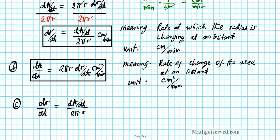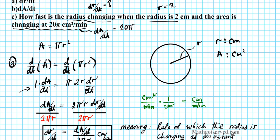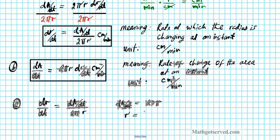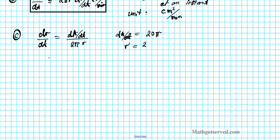But we have just determined that dA/dt is 20 pi and r is 2. So we can plug these two into this equation right here and solve for dr/dt. So dr/dt is equal to 20 pi over 2 pi times 2.